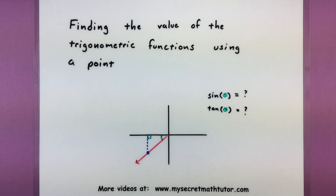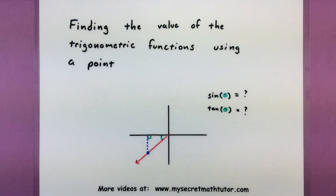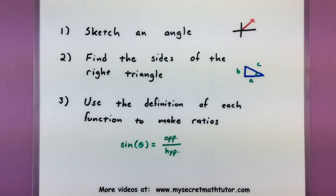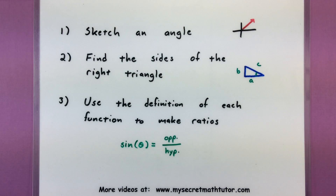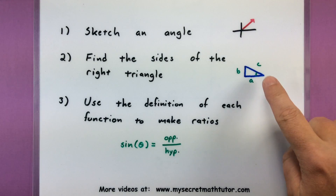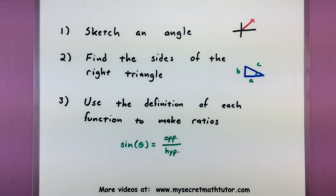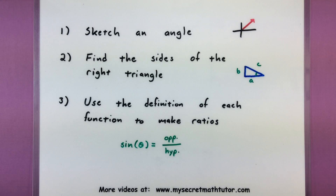In this video I want to help you find the value of different trigonometric functions using only a single point. In a previous video we worked on how to sketch out an angle if you are given a point. This takes it a little bit further — actually finding those different trigonometric values. There's a bit of a process to this, but the first part is really just sketching out that angle, finding the point and making a ray that goes through it. Once we have that, we can form a right triangle with respect to the x-axis. Once we have our right triangle, we can use the definition of each trigonometric function to make the proper ratios.